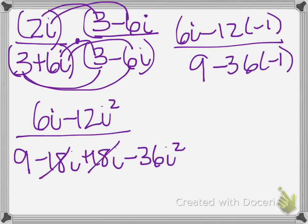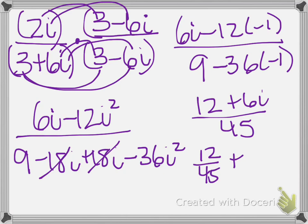I'm going to rewrite this in a plus bi format. So that will give me 12 plus 6i divided by 45. We separate the fractions. We're going to do 12 45ths plus 6 45ths i.